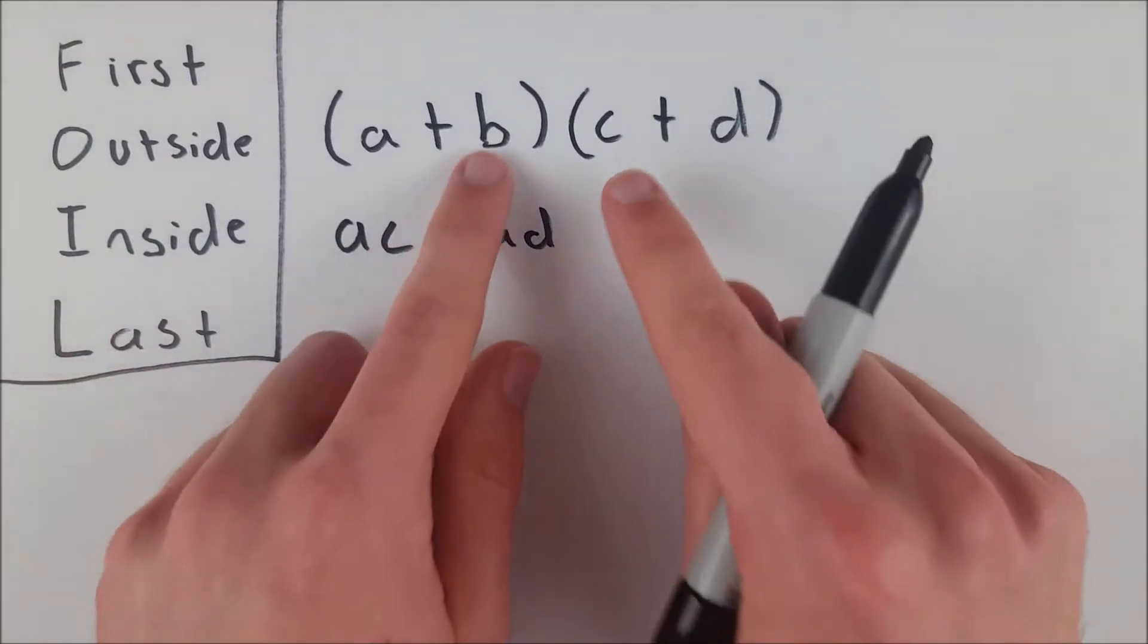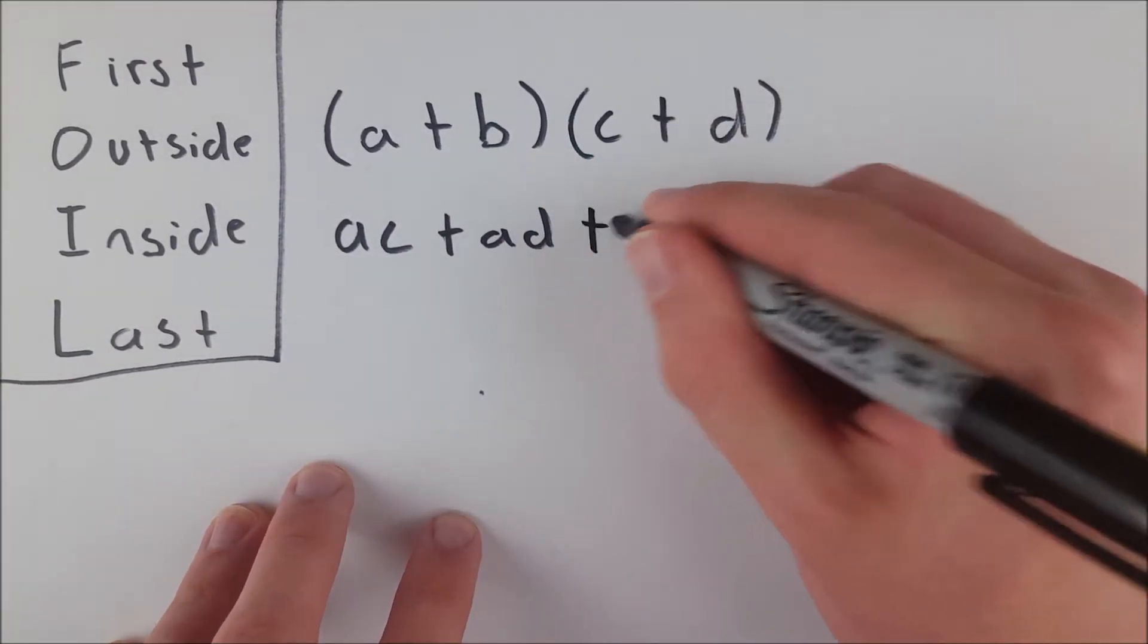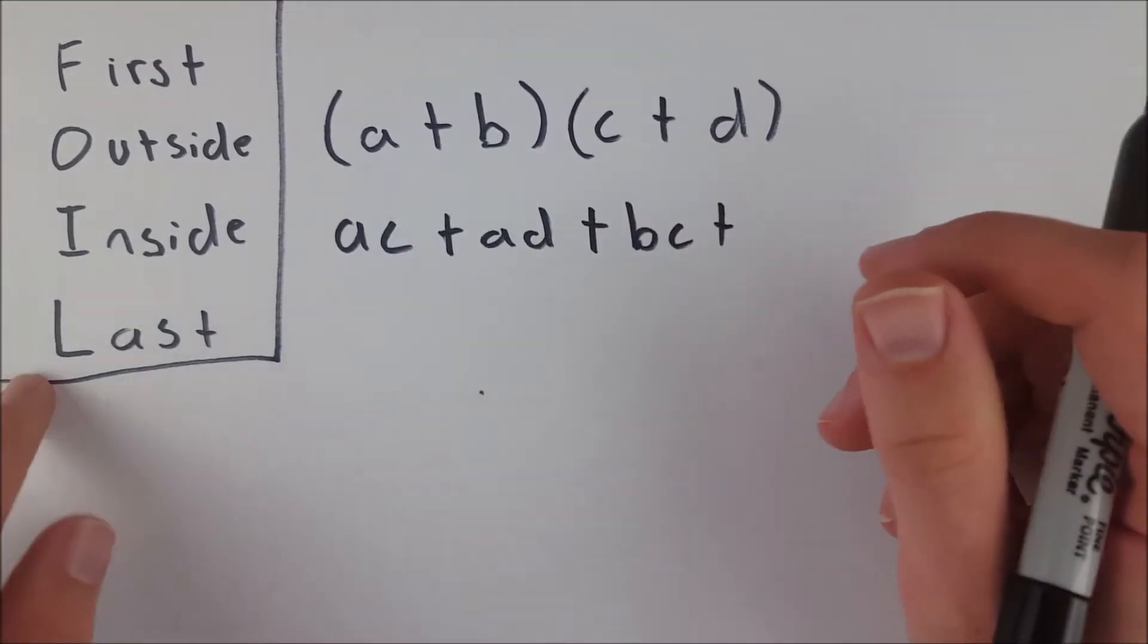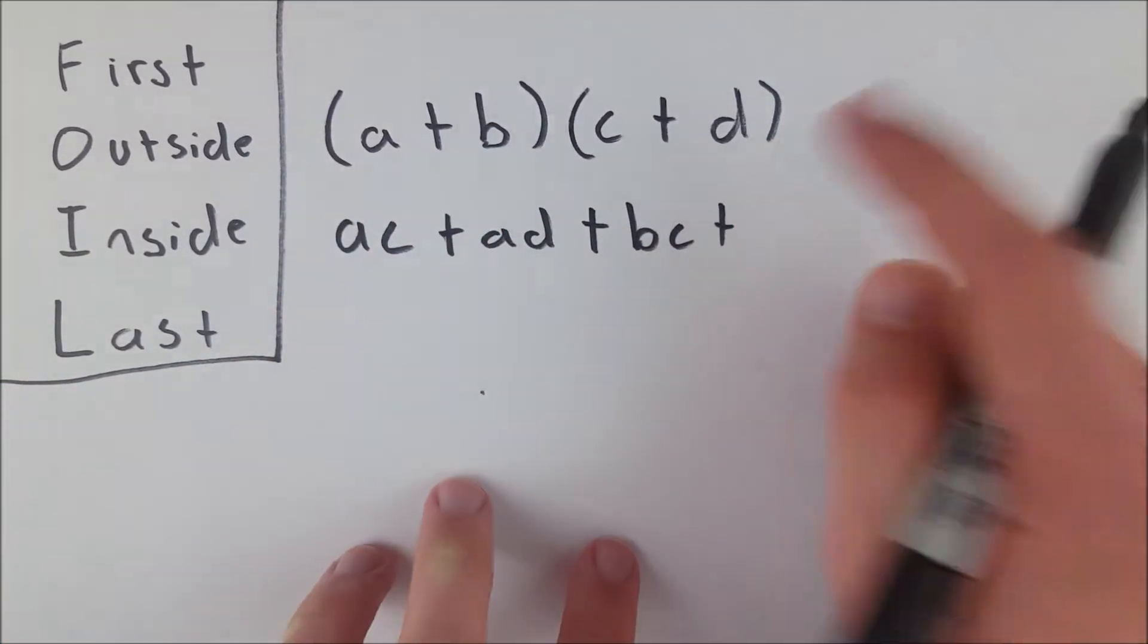Then Inside—we multiply our inside terms next. That's b times c. Then the last step is to multiply our last terms together, b multiplied by d.